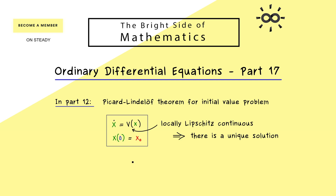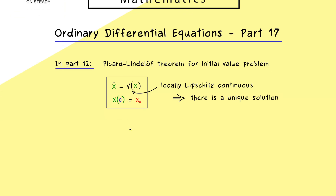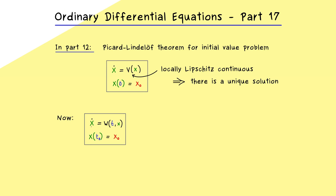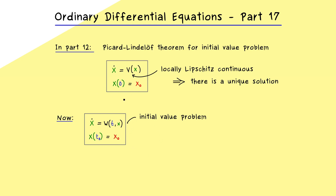Now in many applications, you might have a non-autonomous system, where on the right-hand side the map w gets two inputs: t and x. We then have two possibilities: either we do the standard reduction to an autonomous system, or we completely reformulate the Picard-Lindelöf theorem for this case. Since such systems occur a lot in applications, it's really helpful to reformulate it, and it also gives us the possibility to generalize things a little bit.